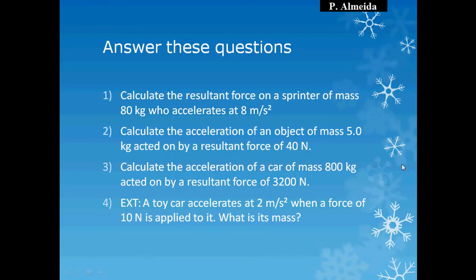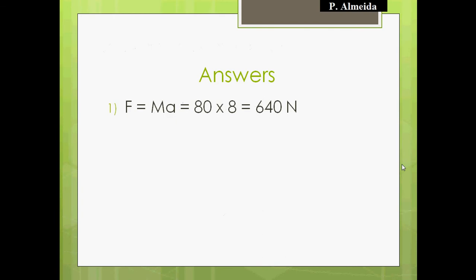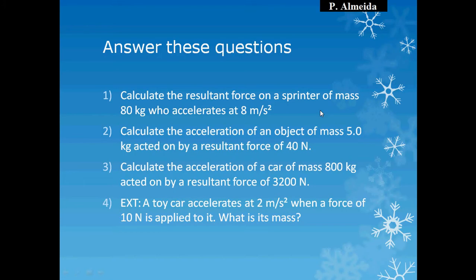More exercises from AQA. Question one: calculate the resultant force on a sprinter of mass 80 kilograms who accelerates at 8 meters per second squared. I want resultant force — that's mass times acceleration: 80 times 8 gives 640 Newtons. Normally there's a mark for the working out, a mark for the answer, and a mark for the units — so it's a 3-mark question.